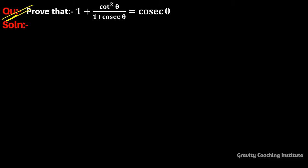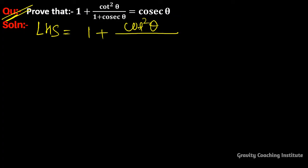Prove that (1 + cot²θ) / (1 + cosecθ) = cosecθ. So here LHS is equal to 1 plus cot square theta upon 1 plus cosec theta.